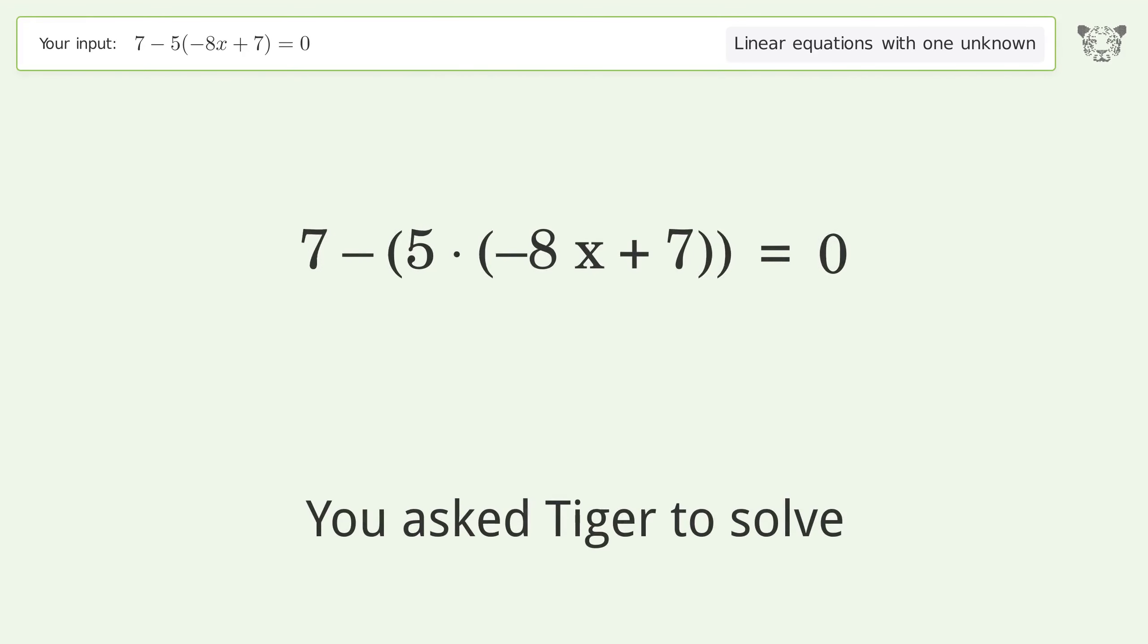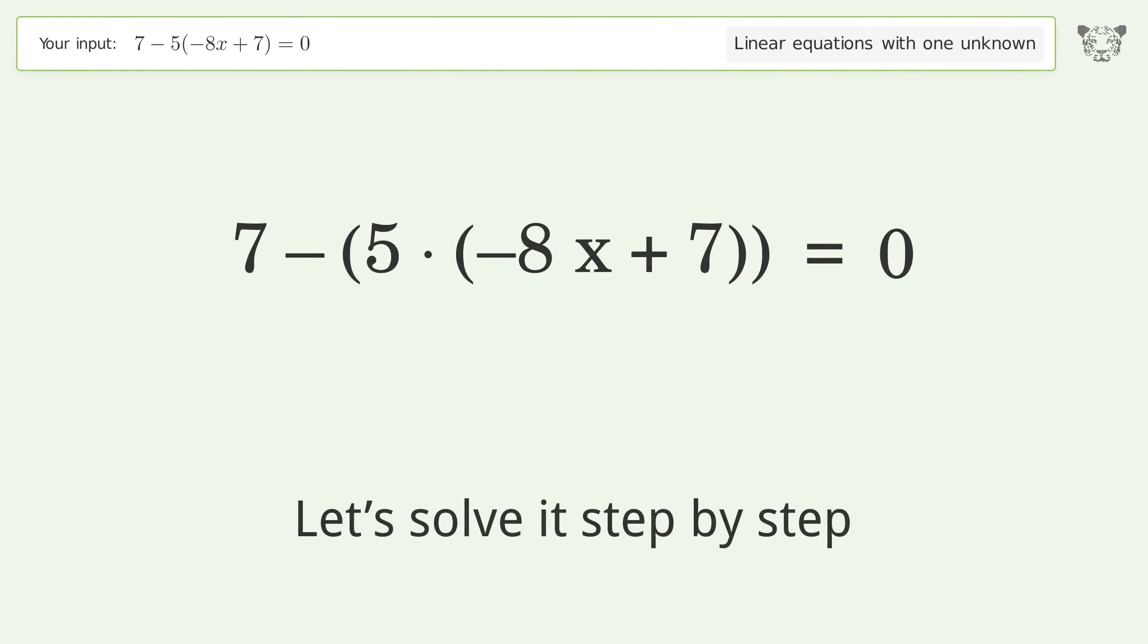You ask Tiger to solve this. This deals with linear equations with one unknown. The final result is x equals 7 over 10. Let's solve it step by step and simplify the expression.